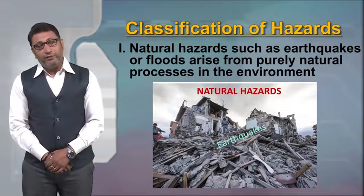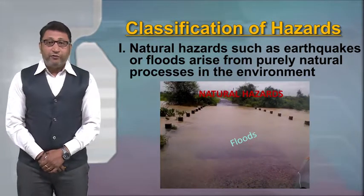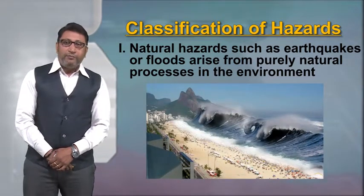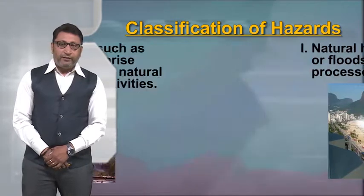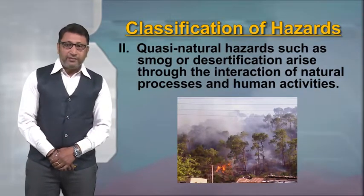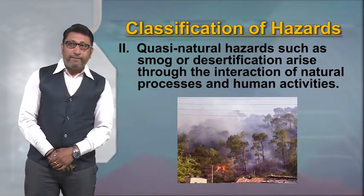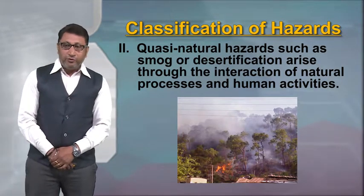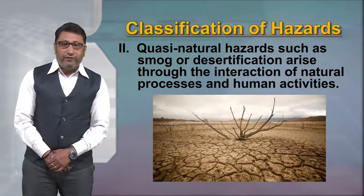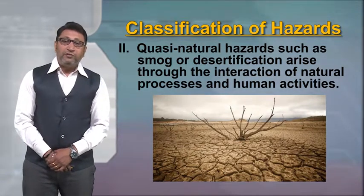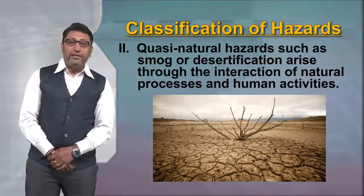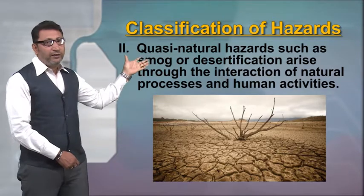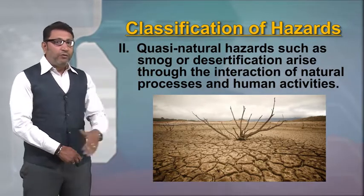Natural hazards such as earthquakes and floods arise from purely natural processes in the environment, over which common people don't have any control. Quasi-natural hazards such as smog — a combination of smoke and fog — and desertification arise through the interaction of natural processes and human activities. From these photographs it is very clear about the distinction between natural and quasi-natural hazards.